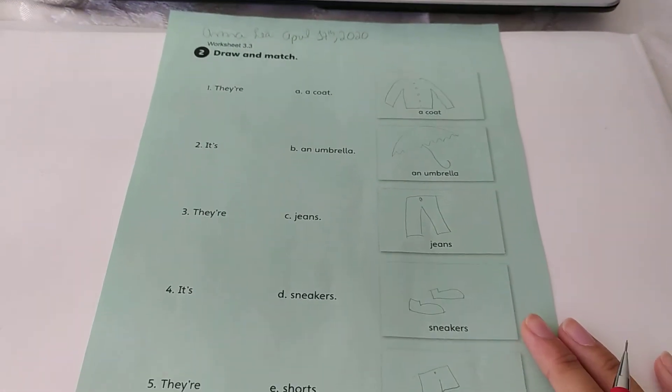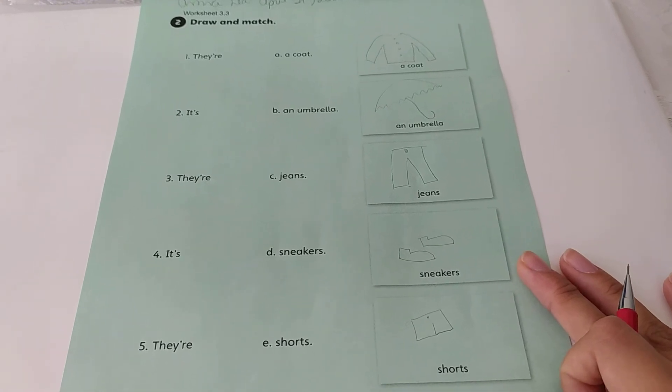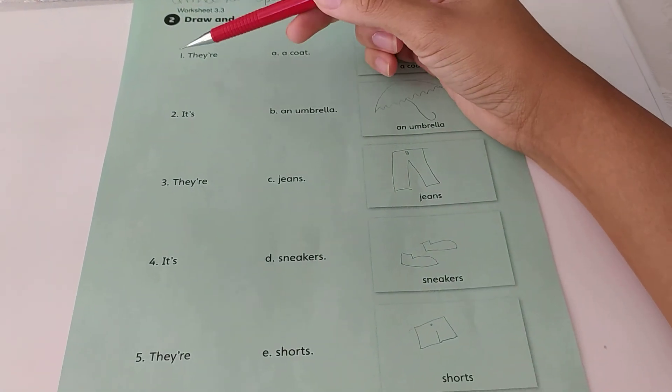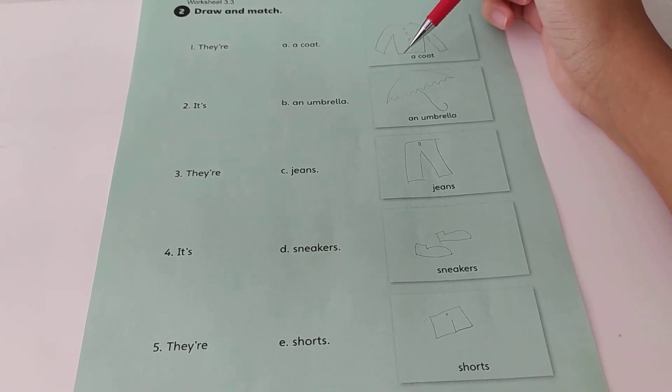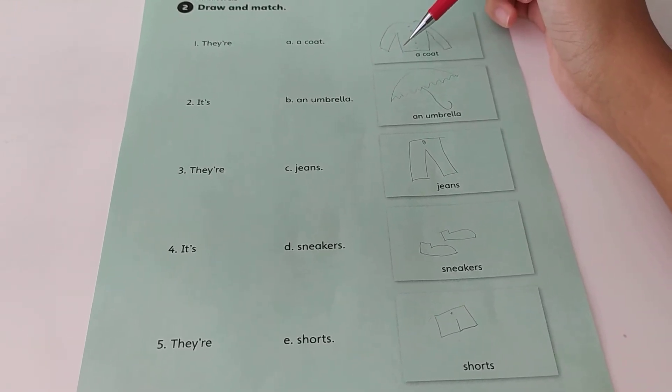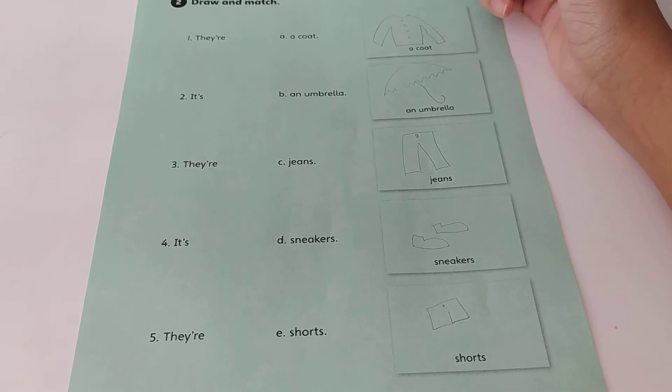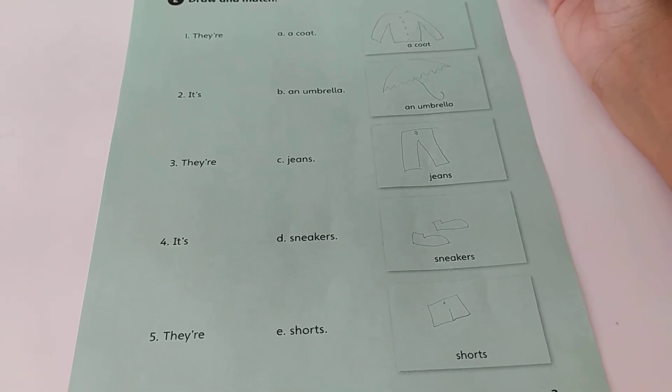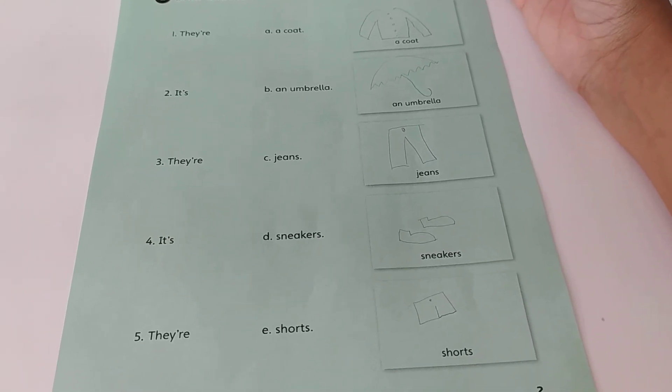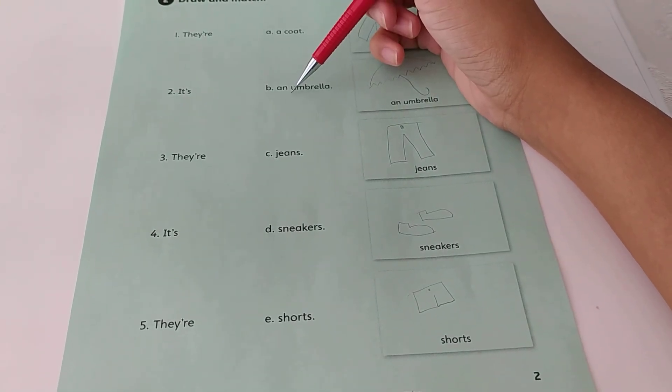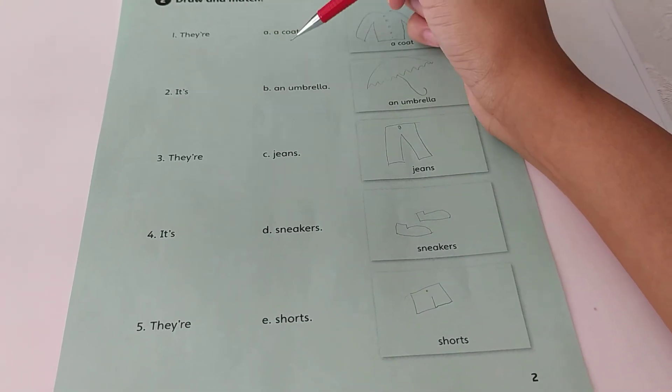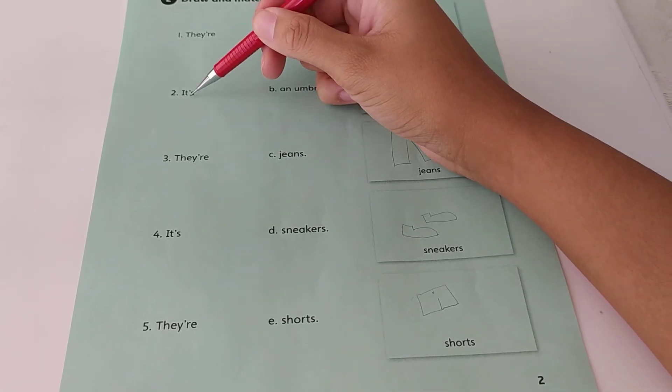And then you are gonna match. They are a coat. Yes or no? No. Because 'they' is something that is more than one, that is big. So they are an umbrella. No. It's a coat. Yes. It's a coat.